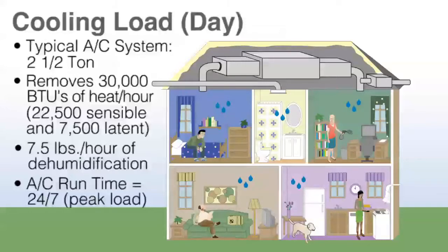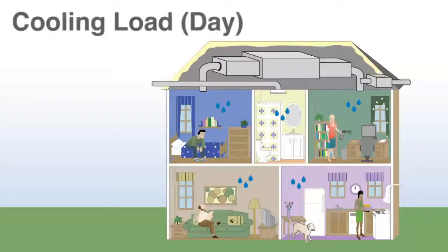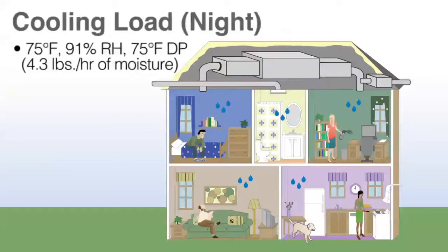Every day is followed by a night. On a warm day, we have a warm night — let's assume for the example we've got a 75 degree evening. We've got 91% relative humidity, which is a 75 degree dew point. As this 100 CFM of air enters the home, it represents 4.3 pounds of moisture per hour.